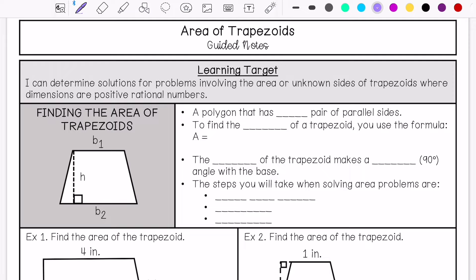A trapezoid is a polygon and it has one pair of parallel sides. To find the area of a trapezoid, use the formula one-half times base 1 plus base 2 times height, or you can do base 1 plus base 2 times height divided by 2.